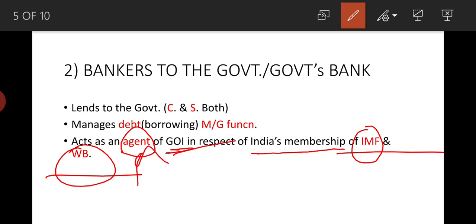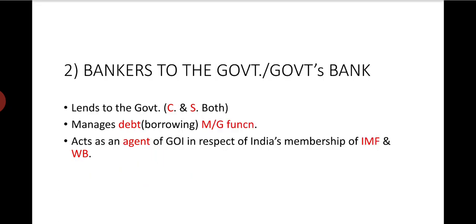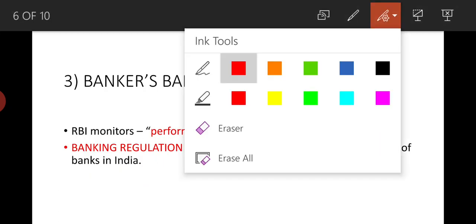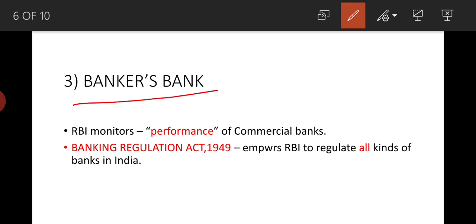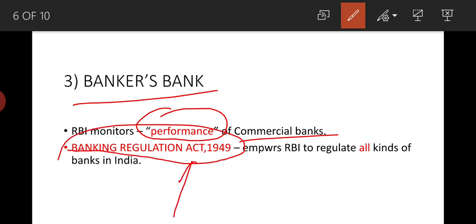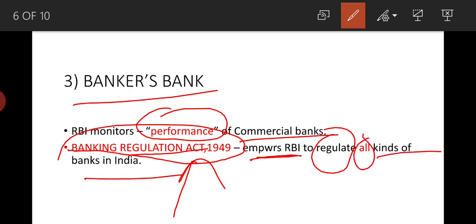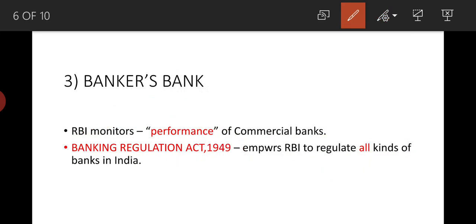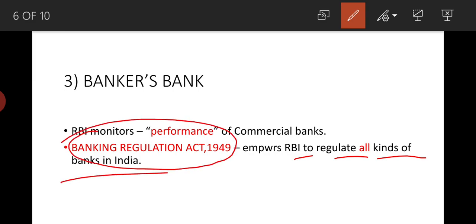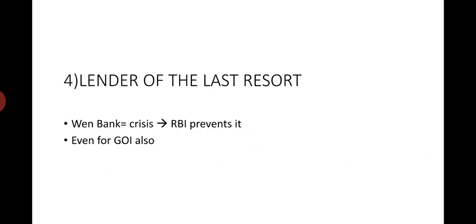The third function: RBI is a bankers' bank — it is a bank for banks. RBI monitors the performance of commercial banks. Importantly, it is by the Banking Regulation Act — not the RBI Act 1934 — that this act empowers RBI to regulate all kinds of banks in India. A prelims question had asked this distinction.